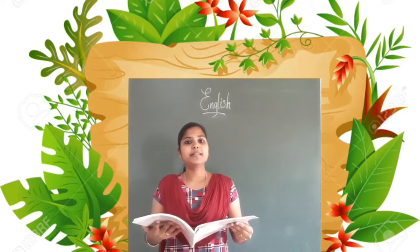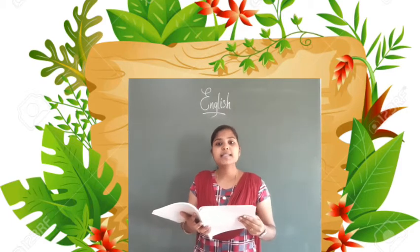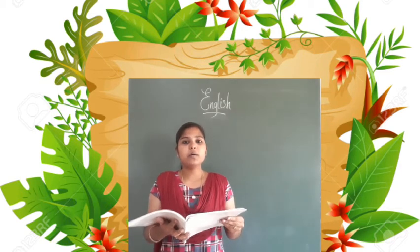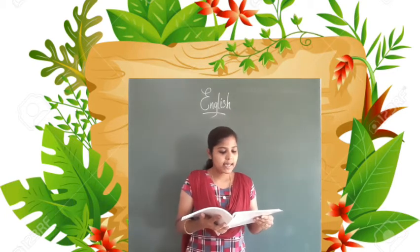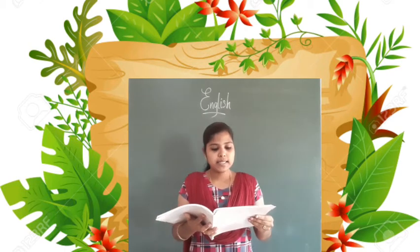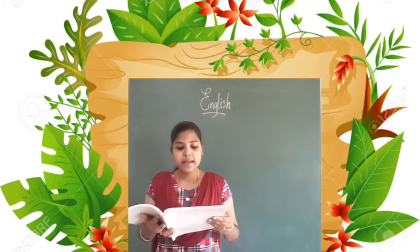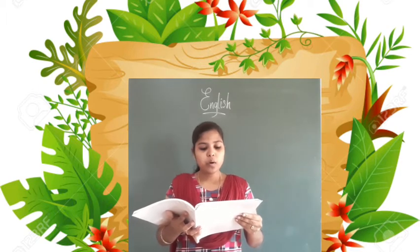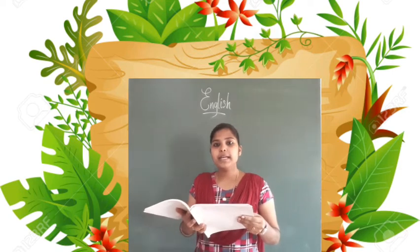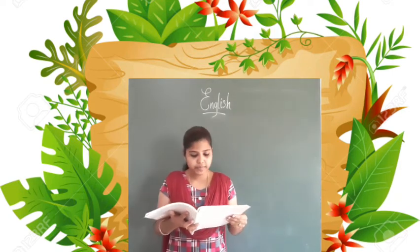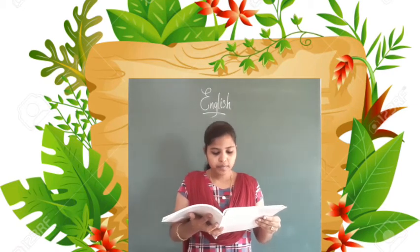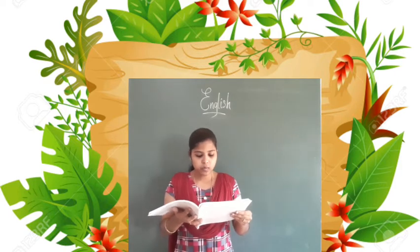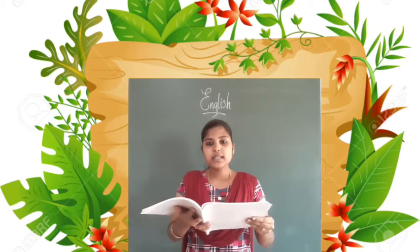Shall we all read it together? Swift things are beautiful — read it along with me, students. We have already read the poem twice or thrice, so now you can read it with me. Swallows and deer, and lightning that falls bright-veined and clear. Rivers and meteors, wind in the wheat. The strong withered horse, the runner's sure feet. And slow things are beautiful — the closing of day, the pulse of the wave that curves downward to spray. The ember that crumbles, the opening flower, and the ox that moves on in the quiet of power.